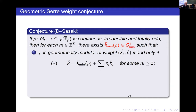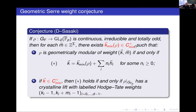So from this point of view, if ρ is geometrically modular of some weight (k,m), then it's geometrically modular of weight (k′,m′), where now the M has changed as well. So let me state the geometric Serre weight conjecture. If you start with a continuously irreducible two-dimensional mod p Galois representation—totally odd meaning the determinant of every complex conjugation is −1—then there's some minimal weight which lies in the minimal cone, and it determines all the weights from which ρ can arise just by shifting by non-negative linear combinations of weights of partial Haasse invariants.